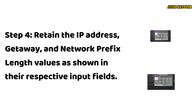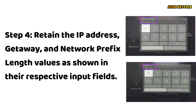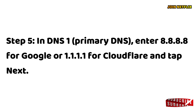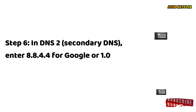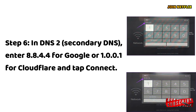Step 4: Retain the IP address, gateway, and network prefix length values as shown in their respective input fields. Step 5: In DNS 1 (Primary DNS), enter 8.8.8.8 for Google or 1.1.1.1 for Cloudflare, and tap Next. Step 6: In DNS 2 (Secondary DNS), enter 8.8.4.4 for Google or 1.0.0.1 for Cloudflare, and tap Connect.